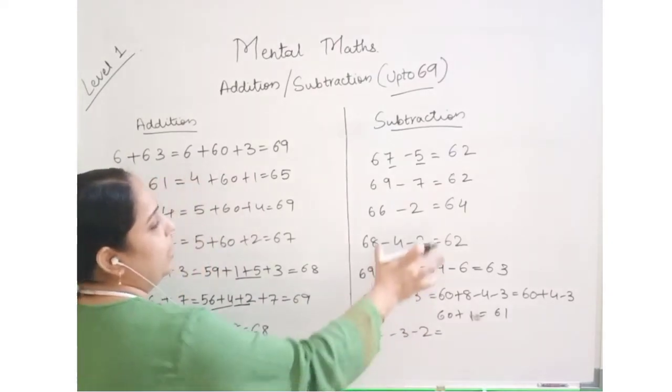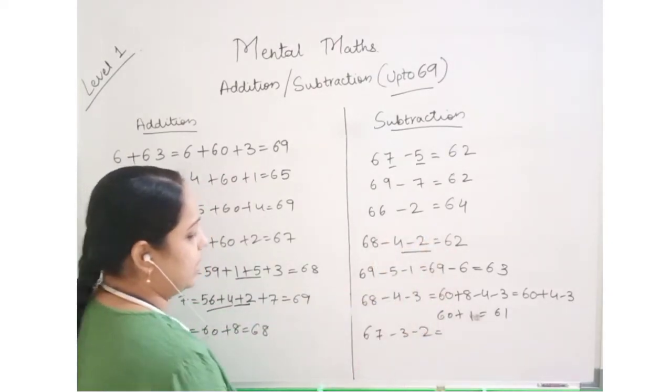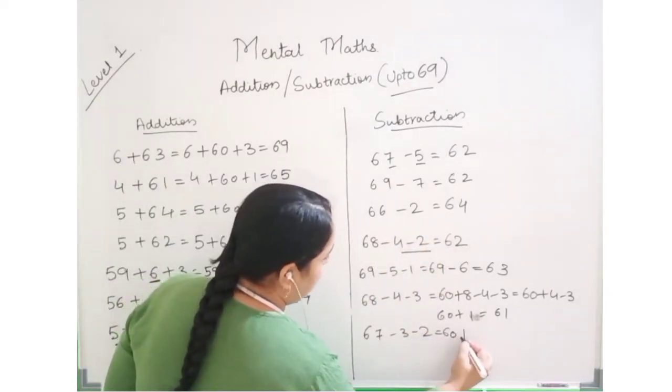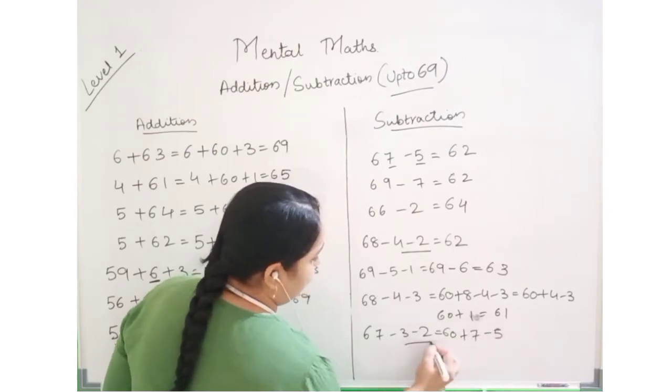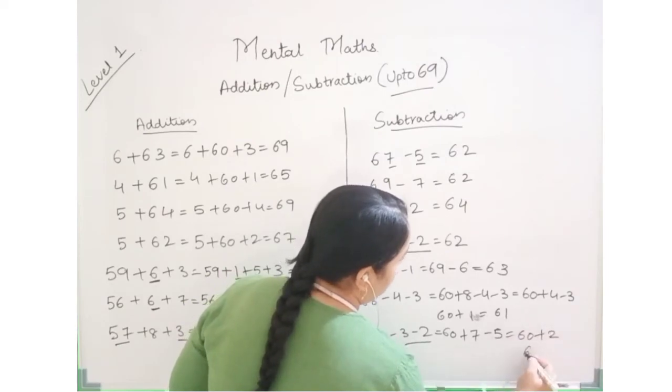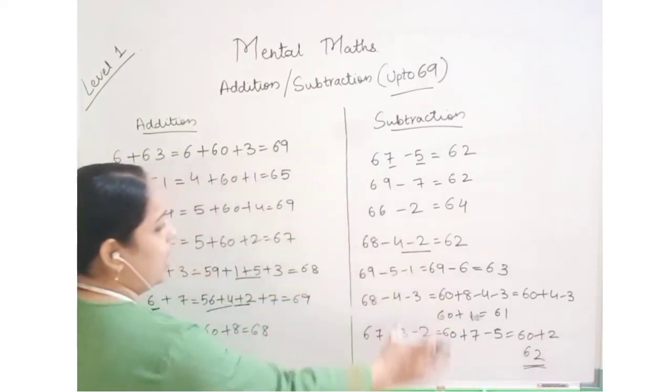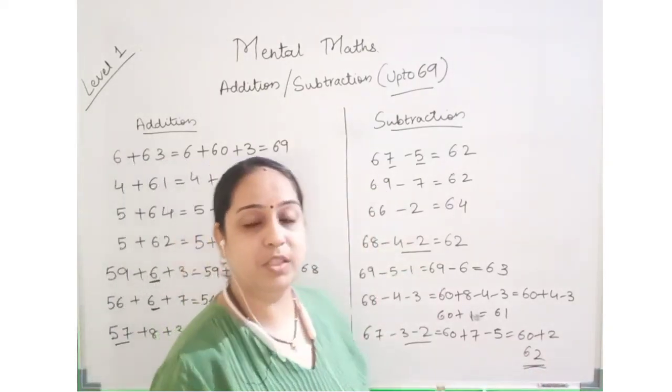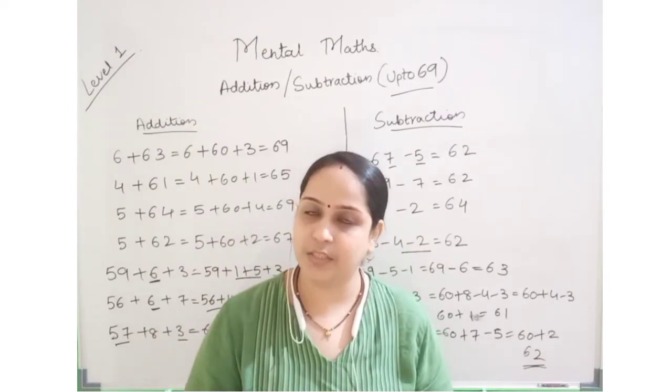Now observe, we can write 67 minus 5. 7 minus 5 is 2, so 60 plus 2, the answer is 62. This is the same process, repeat it.